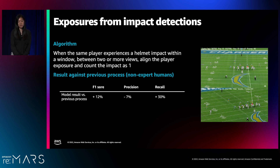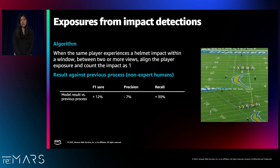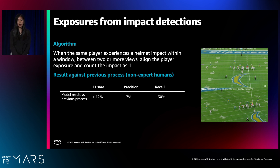After completing all that processing — from assignment through impact detection and combining different perspectives — we compared our results against the previous manual labeling effort by a group of non-expert human labelers. We were actually able to achieve a better score: a higher F1 score of 12%. We lost a little bit on precision, but did really well in terms of recall, which means our model was able to detect impacts that weren't picked up by those human labelers. The fusion across multiple perspectives really allowed us to use information from all angles.